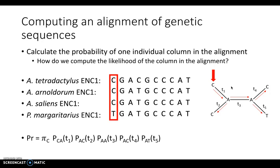Now that we have our data, our model, and our parameters, we can get started. We will first calculate the probability of one individual column in the alignment — how do we calculate the likelihood of that column? These are real alignments of the ENC1 gene taken from our four fish species. This is not the entire ENC1 gene, as the real sequence is several hundred base pairs long; for this example I have selected only ten base pairs. The section I have highlighted demonstrates that P. margaretarius has a substitution that differs from the other three species in our alignment.